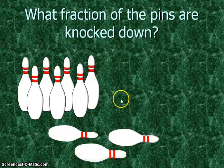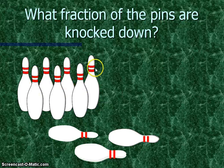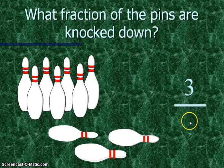What fraction of the arrows hit the pin side? It's 1 divided by 2. What fraction of the pins are knocked down? 2, 4, 6... 3 over 10.